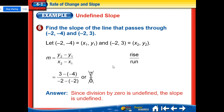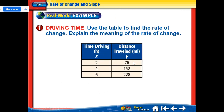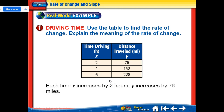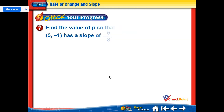Rate of change is actually pretty easy — it's just a real-world slope problem. They gave us three ordered pairs; you only need to pick two of them to use.